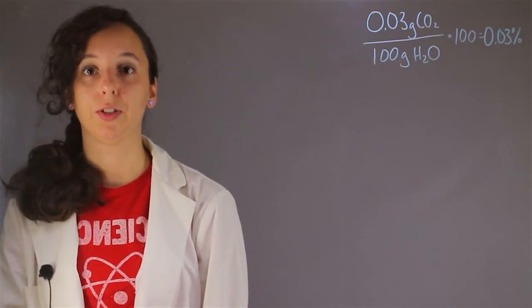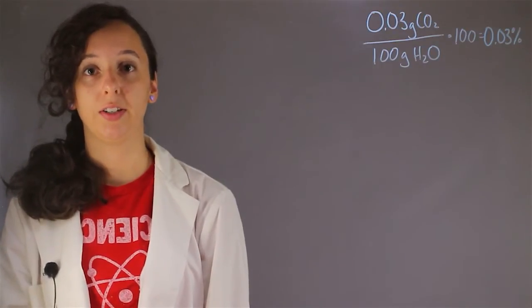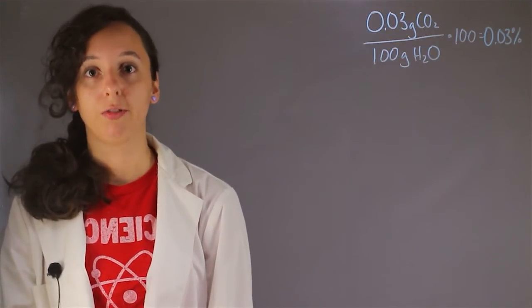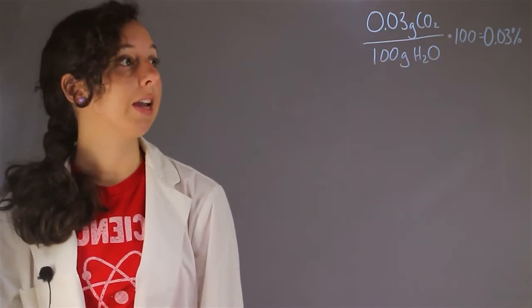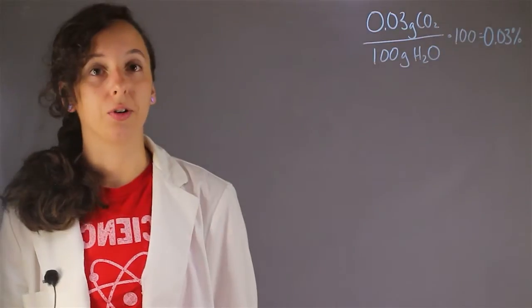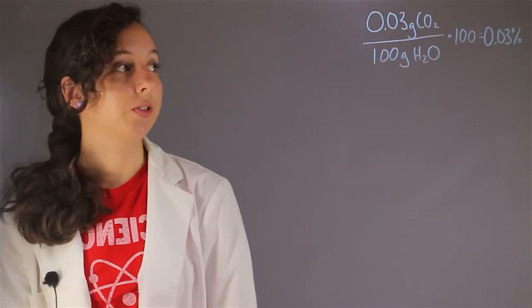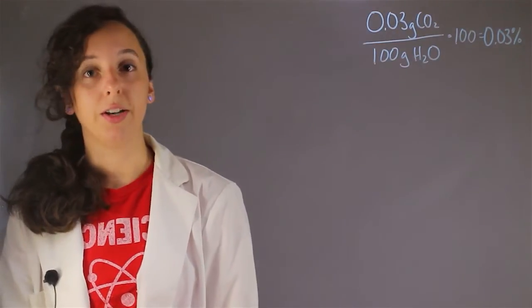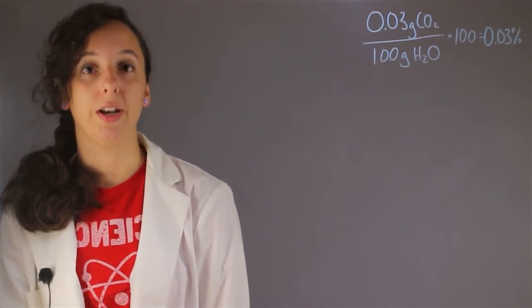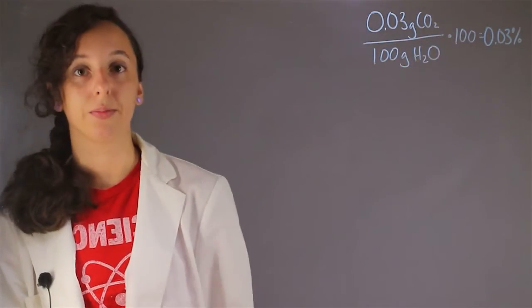So for this problem, let's assume a couple of things. First, that we're calculating this percent as a mass percent, which means that we basically assume that we have 0.03 grams carbon dioxide and 100 grams of water, which we can multiply by 100, and this is going to give us our correct percent, 0.03%. So this is kind of our first assumption that we have 0.03 grams carbon dioxide and 100 grams of water.